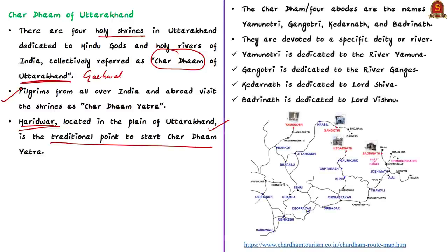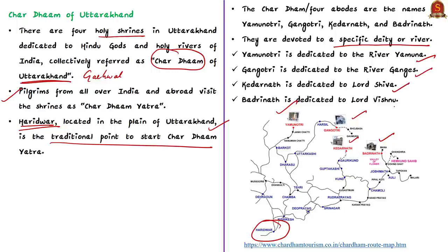The four Chardham pilgrim destinations are Yamunotri, Gangotri, Kedarnath, and Badrinath. These four sites are devoted to specific deities or rivers: Yamunotri is dedicated to the river Yamuna, Gangotri to the river Ganga, Kedarnath to Lord Shiva, and Badrinath to Lord Vishnu.